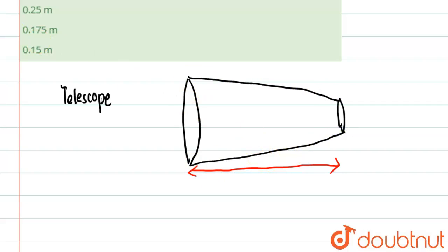If you see properly, the focus is over here. If the eyepiece's focus is also over here, then the distance between the eyepiece and the objective will be focal length of objective plus focal length of eyepiece.